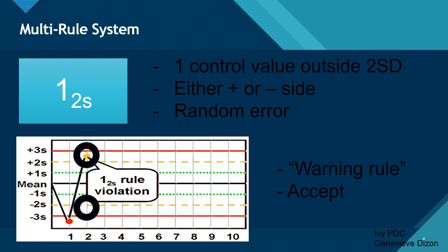The 1-2-S rule is known as the warning rule. You accept the specimen because it's just warning you that there might be something wrong. This would alert the technologist of possible problems. What you do next is start looking for errors — look at other controls or look at previous results. Do not reject the result; you can accept the result and continue with your testing.